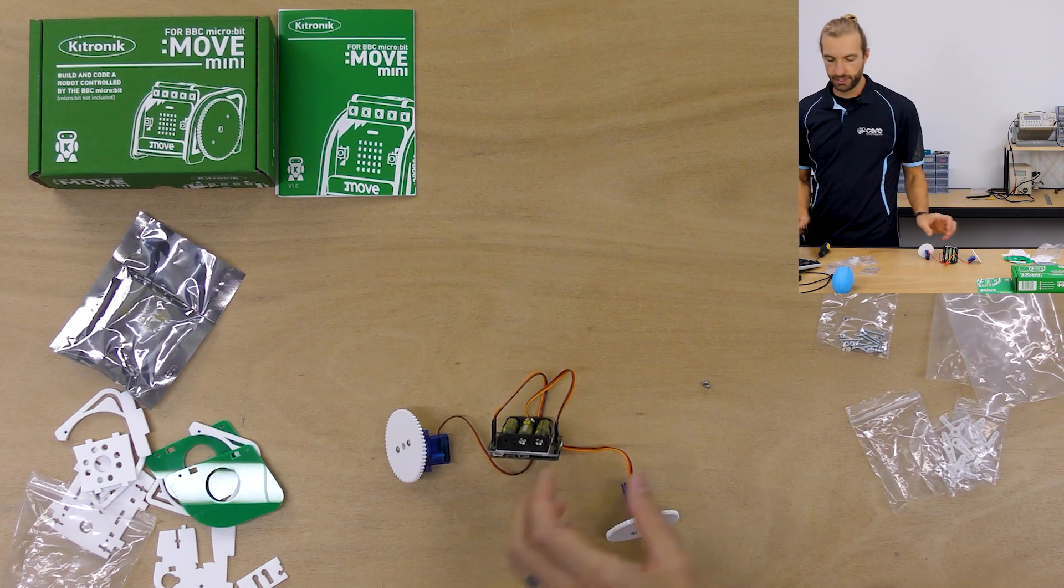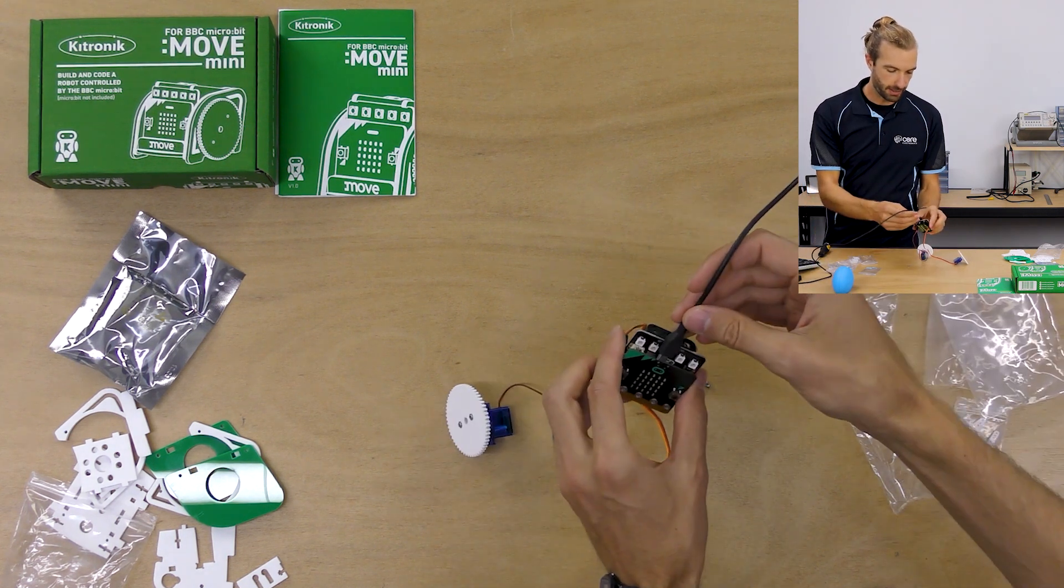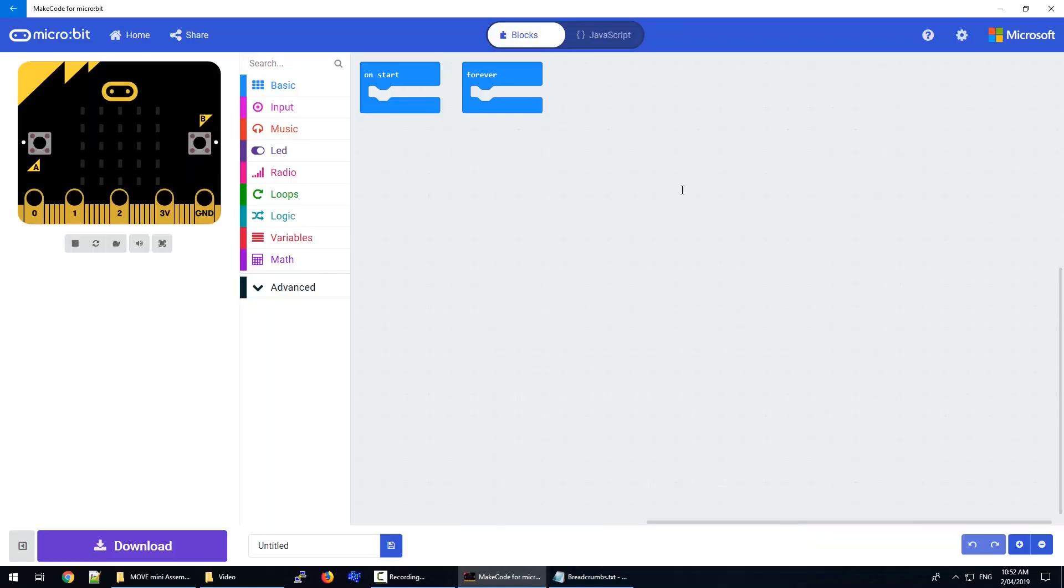Then we'll open up MakeCode for microbit just to do a calibration of our servos. So next we're going to open up MakeCode on our computer. And with MakeCode open and our microbit connected, which we can still access the USB port at the top of the microbit.